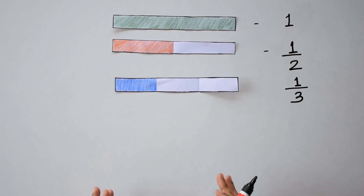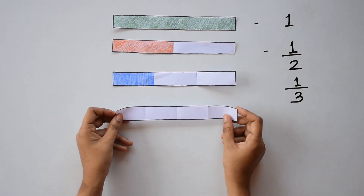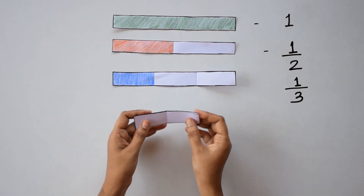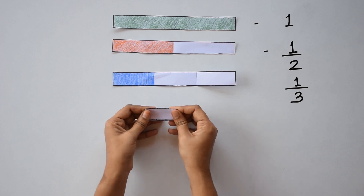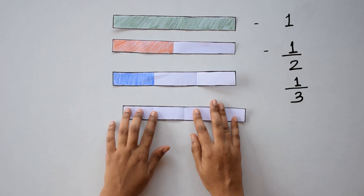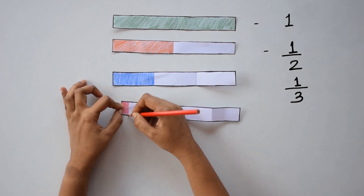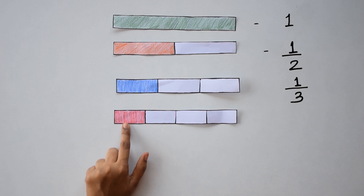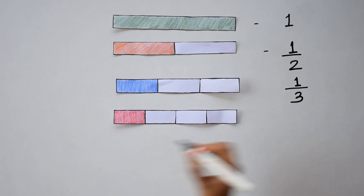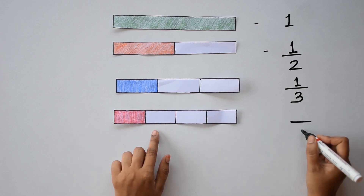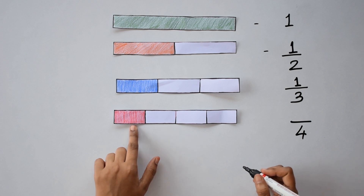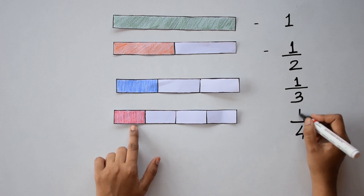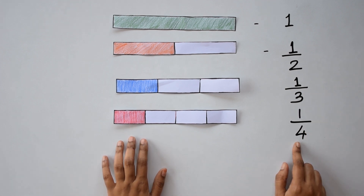So how many one-thirds make up a whole? Did you say three? Yes, that's right. Let's take the next strip. We are going to fold this into four equal parts and shade one part. What fraction does this shaded part represent? Let's write down. The total number of parts is four and the number of shaded parts is one. This is one-fourth or a quarter.